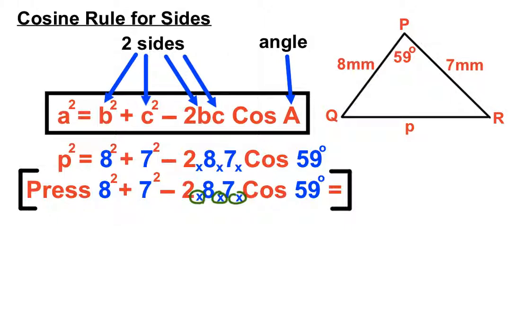So if we press all that in, we'll get P squared, which was at the front on the left-hand side, equals 55 point, various things, 55.31, etc.